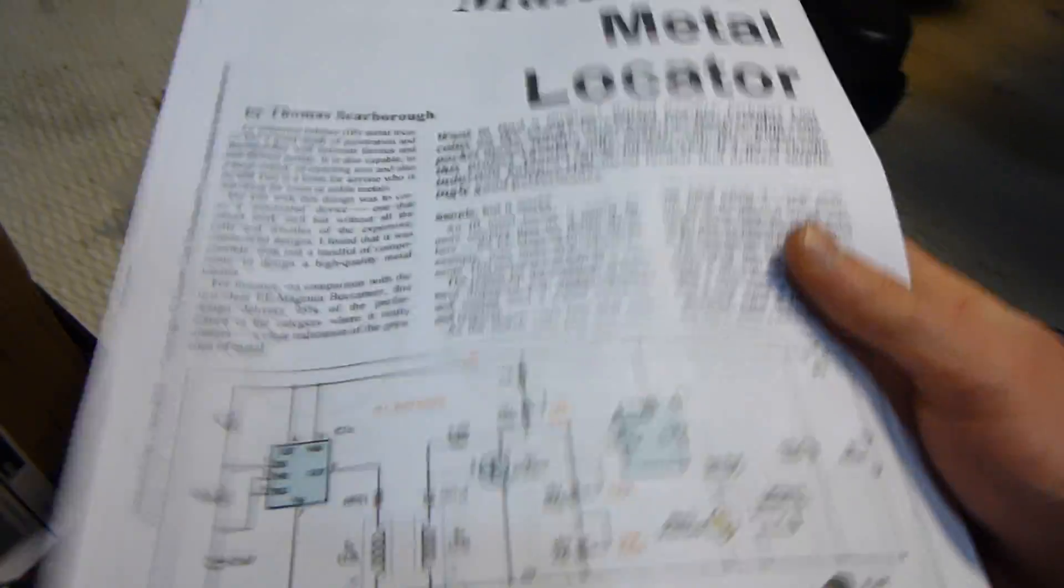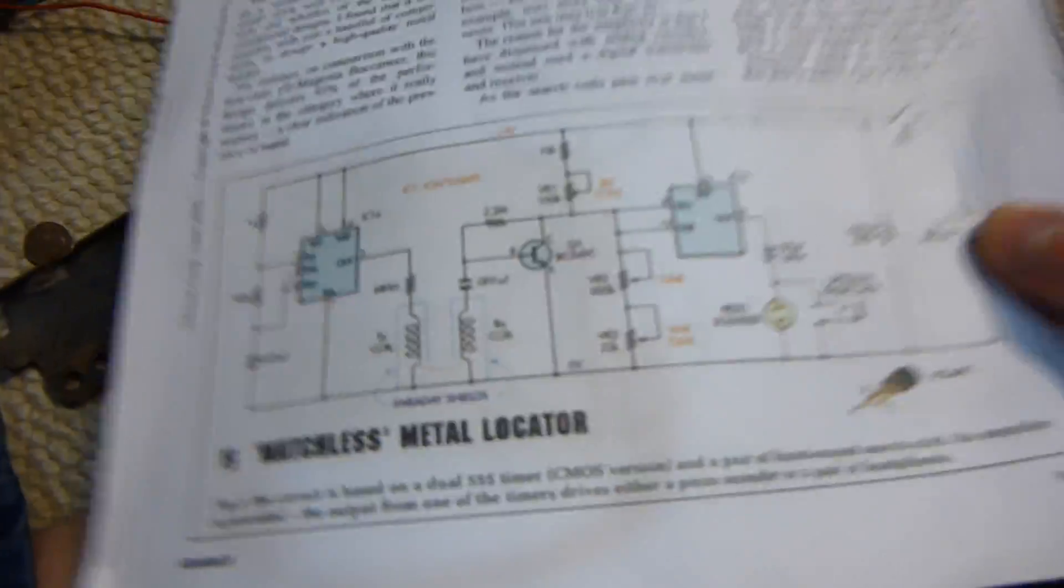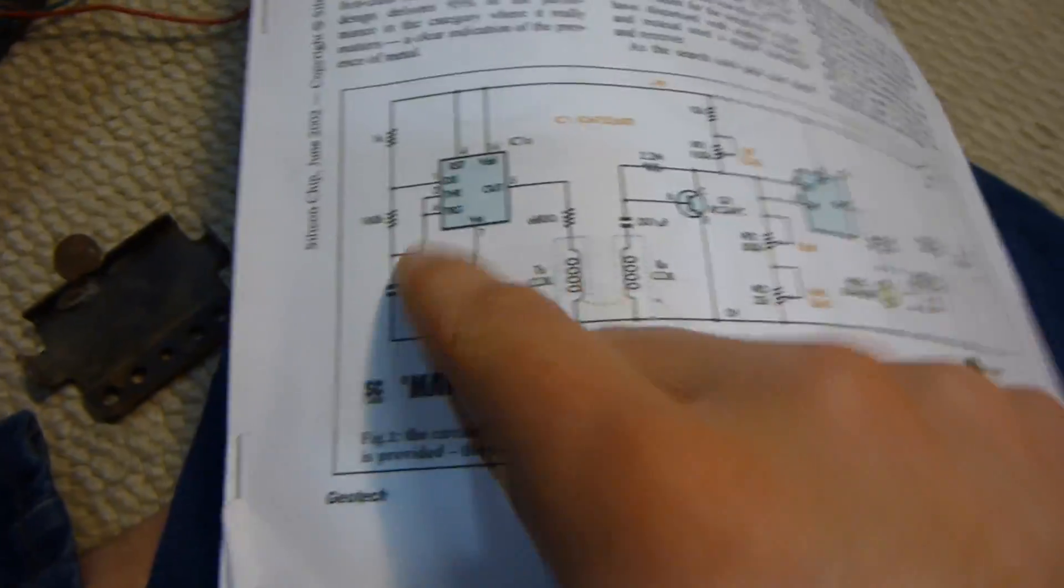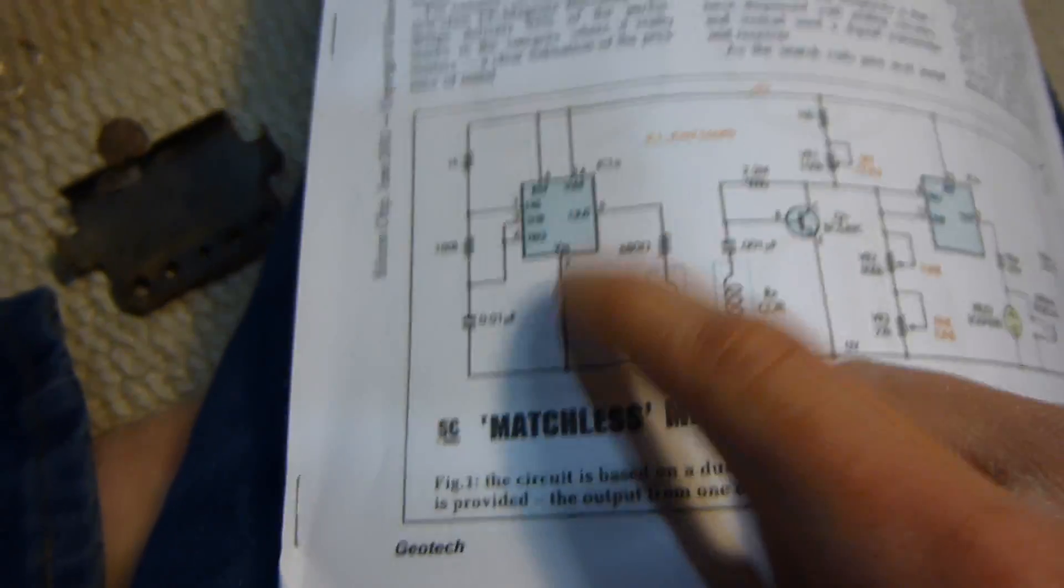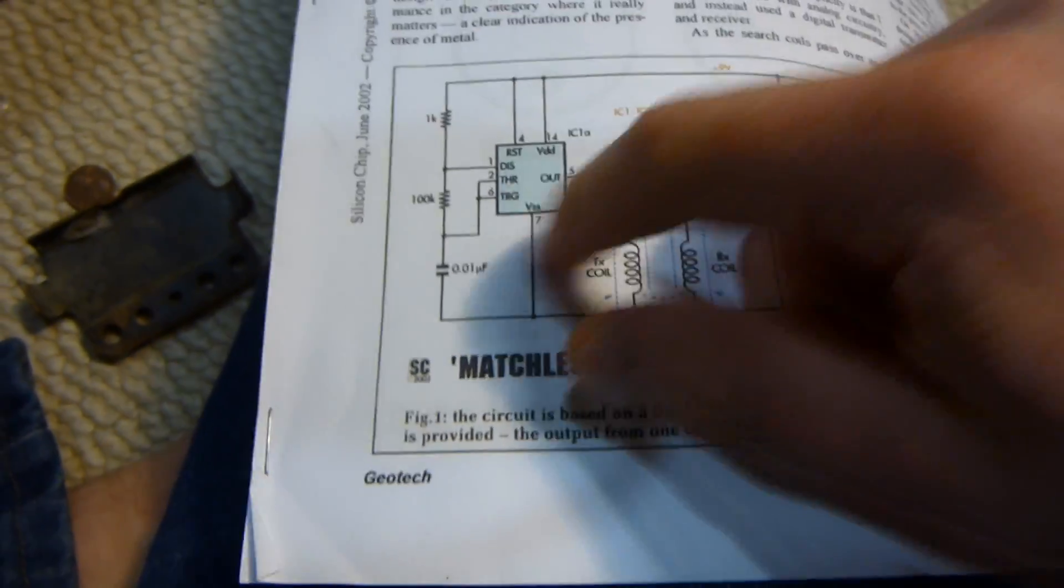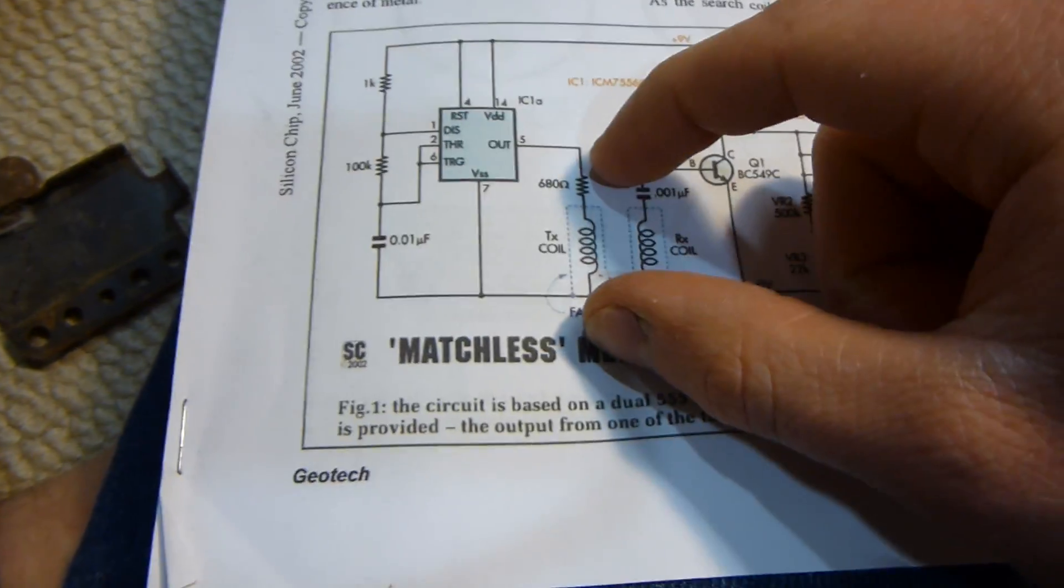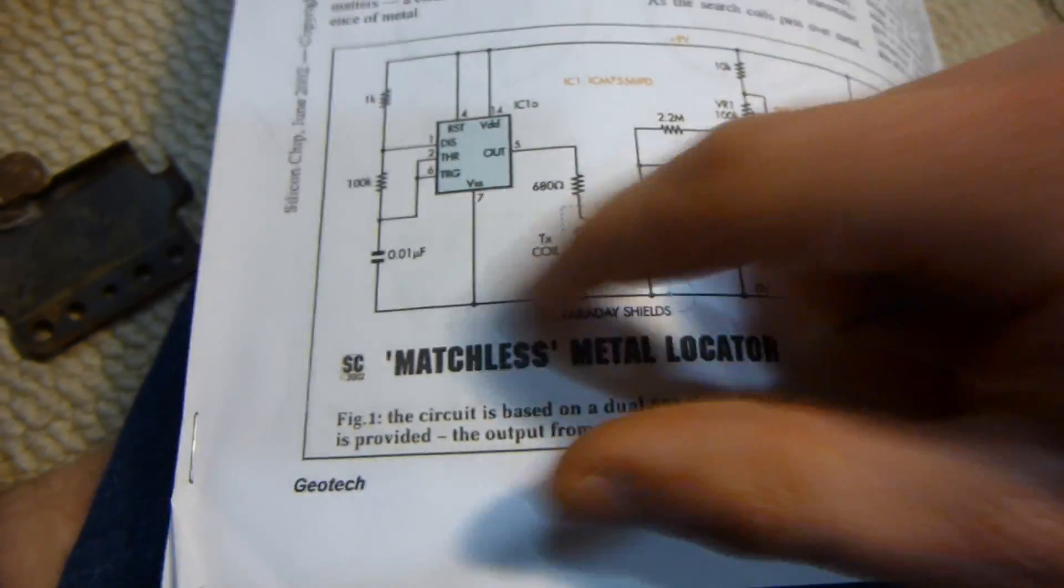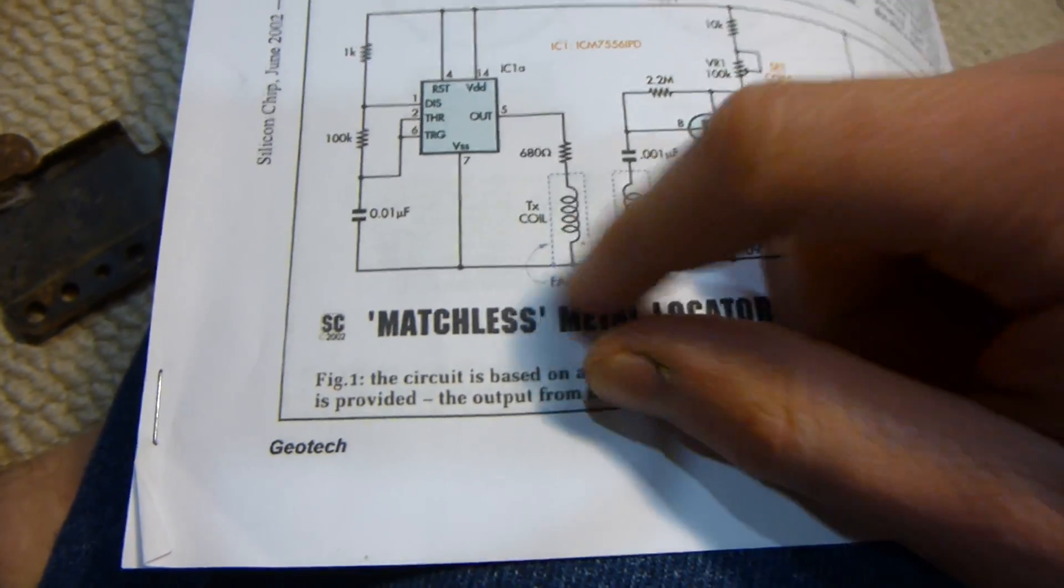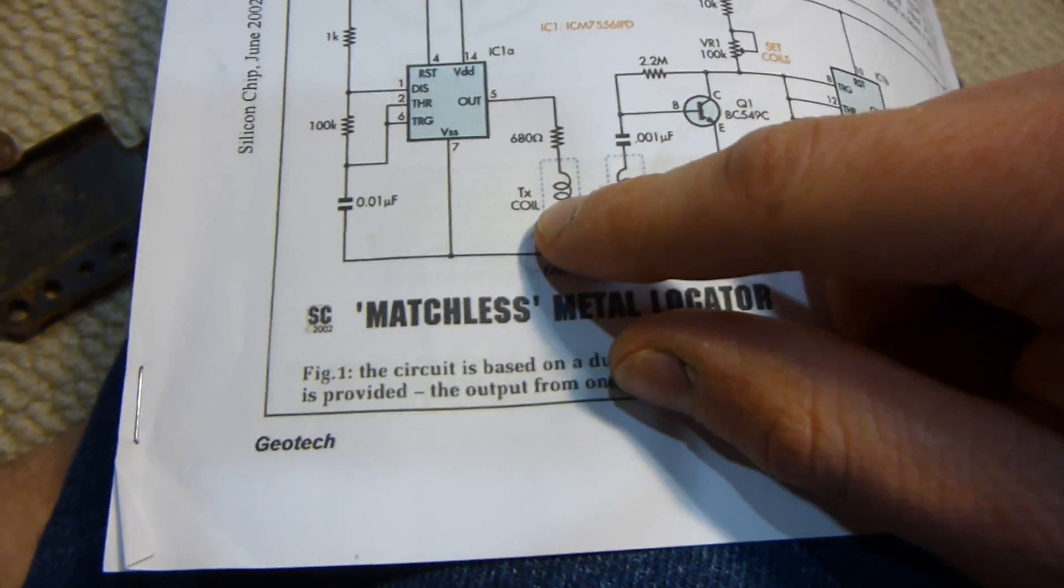And this is all based off of the Matchless Metal Locator by Thomas Sorborg. I'll have the link to the PDF in the description for that. But here's the circuit, you can get it from the PDF. So you can see there's two 555 timers here. This one is basically set at a constant frequency to the transmit coil. So it basically makes a fixed magnetic oscillating field around this magnetic field, which is overlapped over this one.